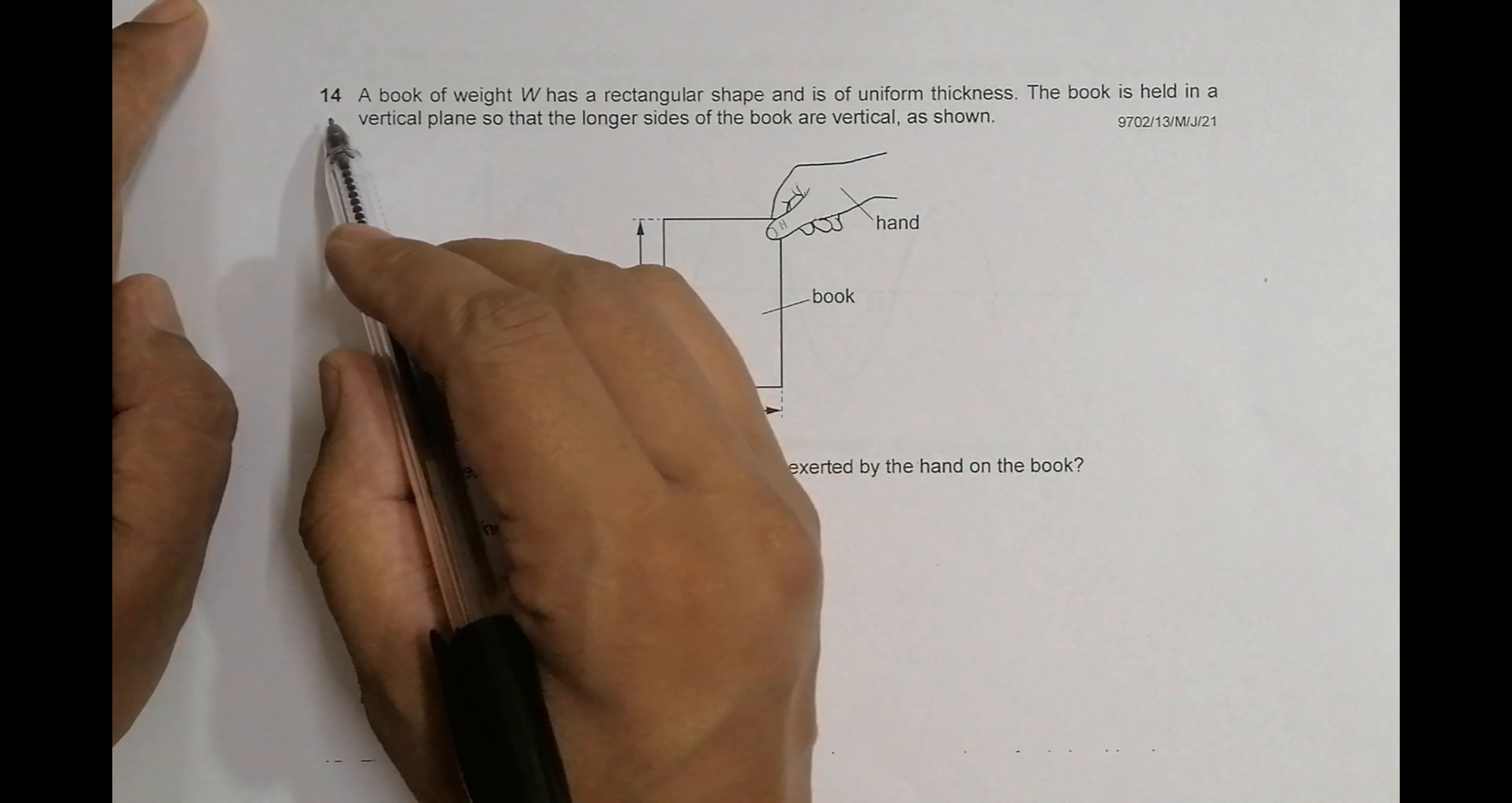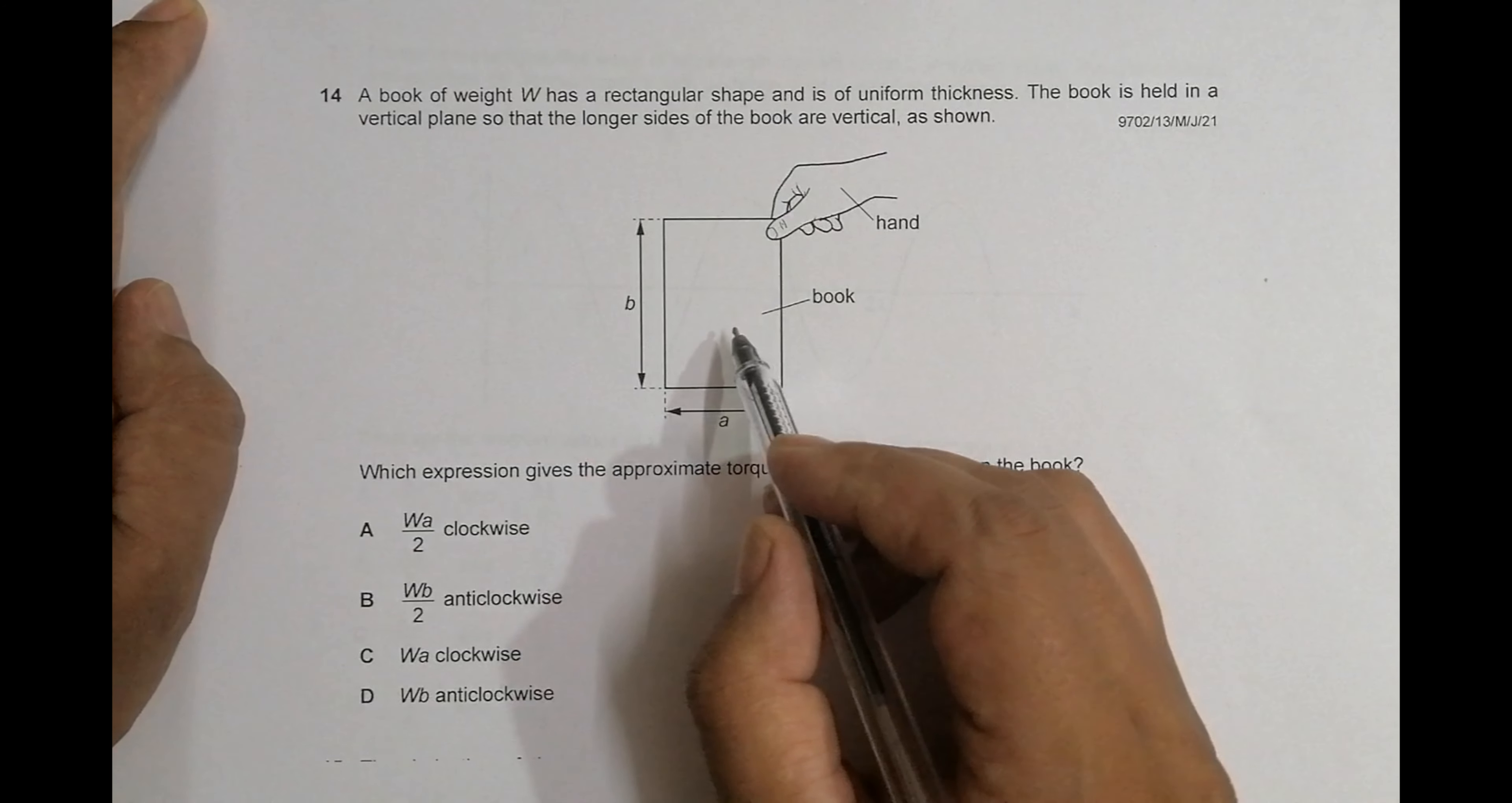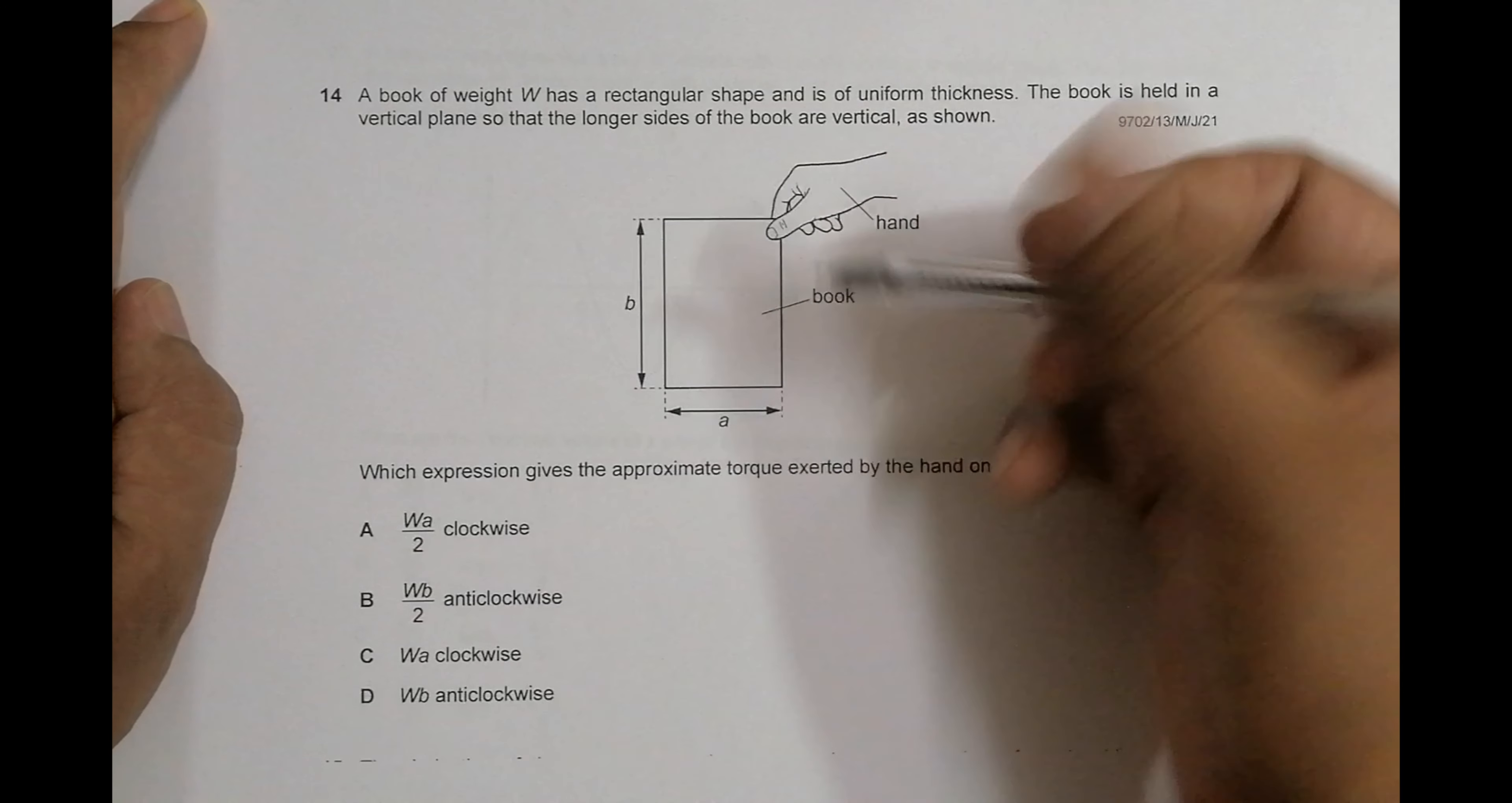A book of weight W has a rectangular shape and is of uniform thickness. The book is held in a vertical plane so that longer sides of the book are vertical. We are observing this from the side, so the long side is along the vertical, this is horizontal.